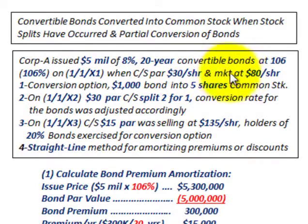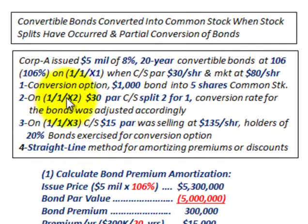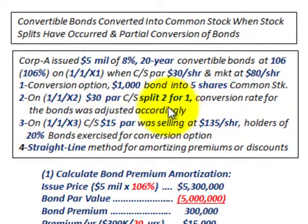The market price of common stock was $80 per share. The conversion option: if you had a $1,000 bond, you could convert it into five shares of common stock. On 11x2, the $30 par common stock was split two for one, and the conversion rate of the bonds was adjusted accordingly.